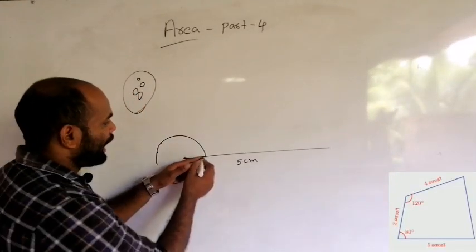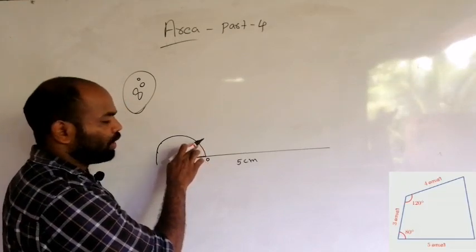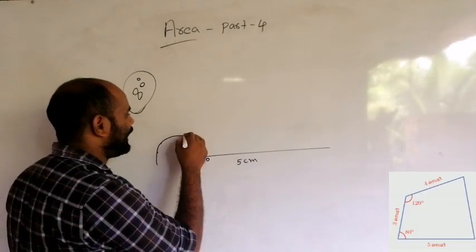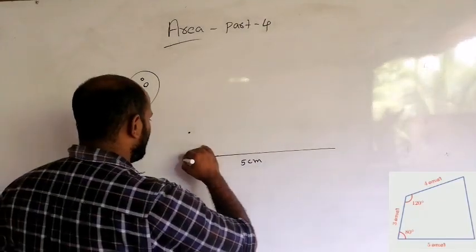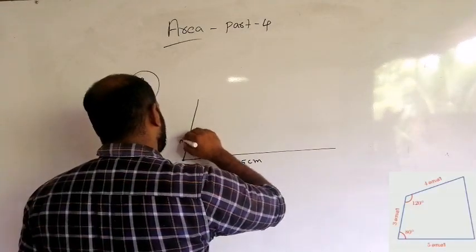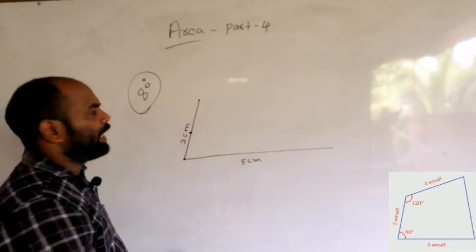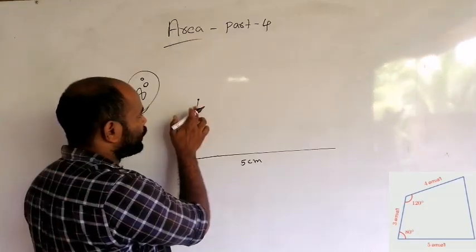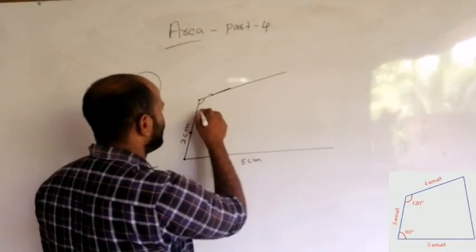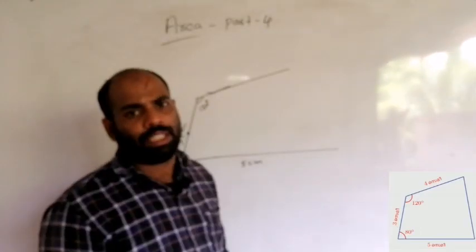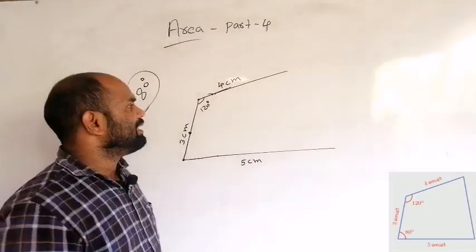We want to put the protractor to 0. This one is 0 — 0, 10, 20, 30 — and that is 80 degrees. Then we have to mark 80 degrees and make a line of length 3cm. Then this angle is 120 degrees and we have to make a line. This angle is 120 degrees and this angle is 4cm.